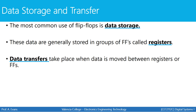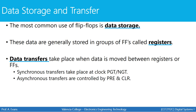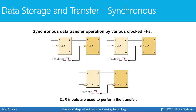When we have registers, we can transfer data from one place to another. For example, when you stick your USB drive into your computer to open a file, that's reading data — a data transfer. When you save an updated file back onto your USB drive, that's writing data — transferring data from your computer to the drive. Data transfers take place when data is moved between registers, which are groups of flip-flops. We have synchronous transfers that take place with a clock signal, and asynchronous transfers that use the pre and clear inputs.